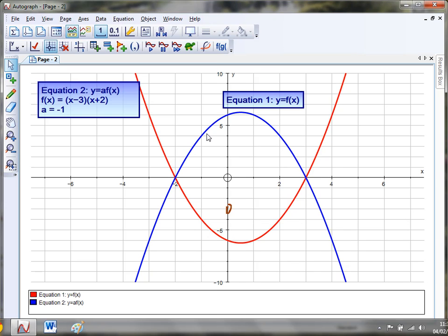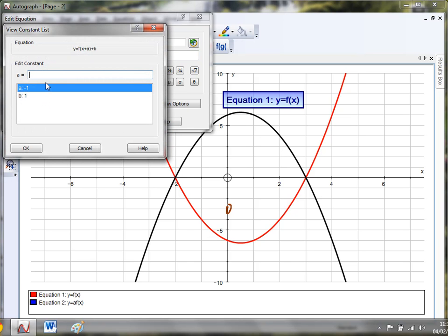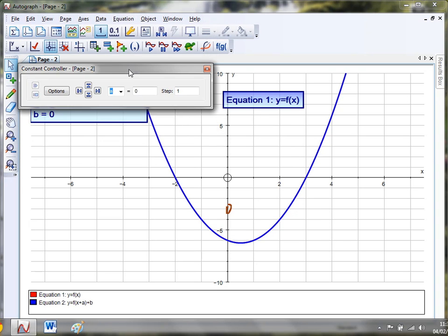If I just close that constant controller down and give this a little double click, what I'm going to do this time is have a look at two functions for the price of one. Say I do f of x plus a, and then after I've done that I add on b. Again, it's always important to get your constants right to start off with, otherwise things move before you or your students have had time to think about it. So I'm going to change my value of a to zero, so nothing's being added on there, and I think I'll also change my value of b to zero. So fingers crossed I should end up with just y equals f of x. Click OK, looking good.